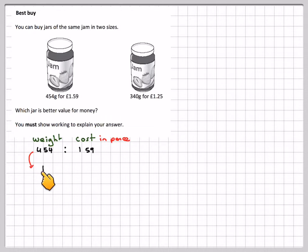How do I get from 454 to 1? I need to multiply by 1 over 454. If I've done it to that side of the ratio, I need to do it to the other side of the ratio as well. So I need to multiply by 1 over 454.